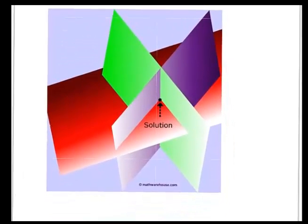Okay, and then the third way is for planes to intersect at a very specific point. So here's an example of three planes that are intersecting at this one very specific point. You can see that right in the middle there.